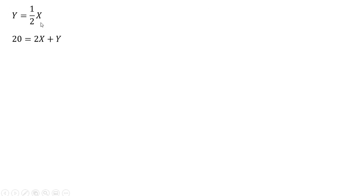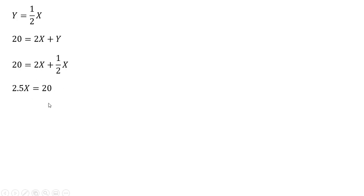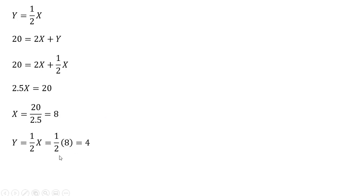Two equations, two unknowns. We plug Y = ½X into the budget constraint and solve for X, dividing through by 2.5, giving us X equals 8. We then plug 8 back into Y = ½X and find that Y equals 4.